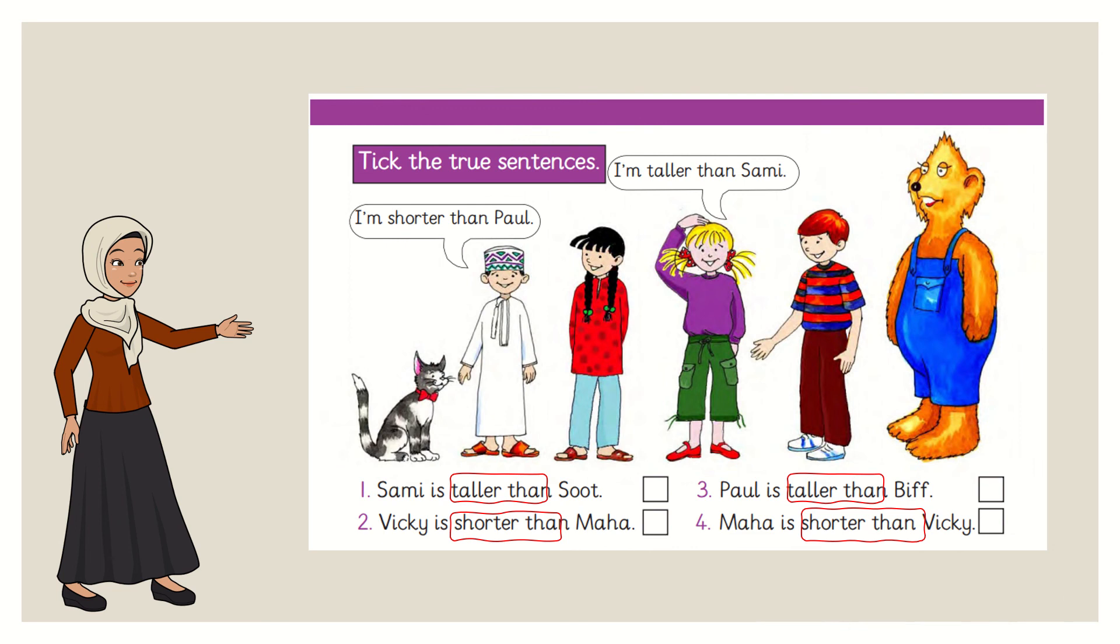Okay, now grade three. Now we have reading. Who is very tall here? Can you see the picture here? We have Biff and Suut with different heights. So who's very tall here? Biff, right? Biff is very tall. Now we have here Paul, then Vicky, then Maha, Sammy, and Suut.